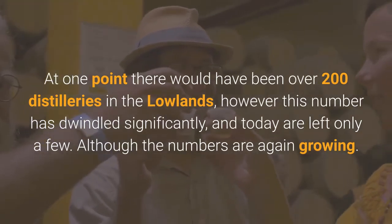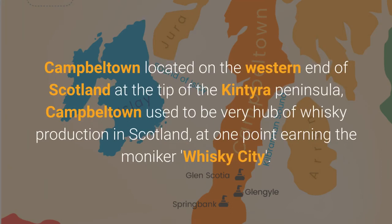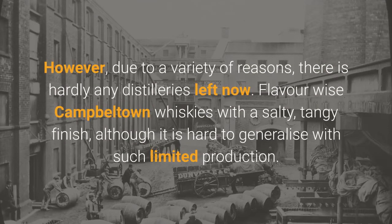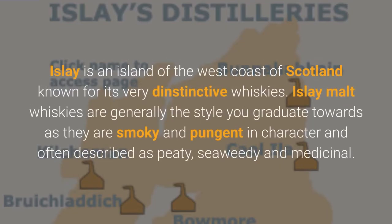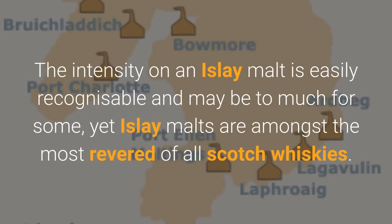Although the numbers are again growing. Campbeltown, located on the western end of Scotland at the tip of the Kintyre Peninsula, used to be the very hub of whisky production in Scotland, at one point earning the moniker 'whisky city.' However, due to a variety of reasons, there are hardly any distilleries left now. Flavour-wise, Campbeltown whiskies have a salty, tangy finish, although it is hard to generalise with such limited production. Islay is an island off the west coast of Scotland known for its very distinctive whiskies. Islay malt whiskies are generally the style you graduate towards — they are smoky and pungent in character, often described as peaty, seaweedy and medicinal. The intensity of an Islay malt is easily recognisable and may be too much for some, yet Islay malts are amongst the most revered of all Scotch whiskies.